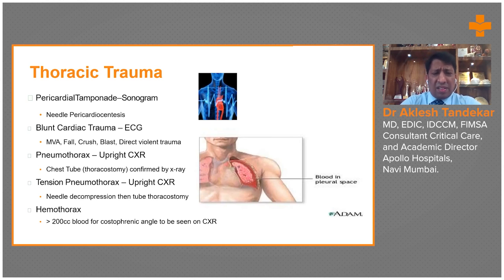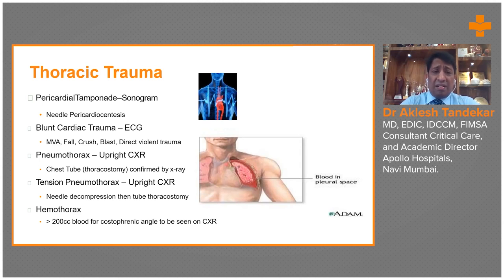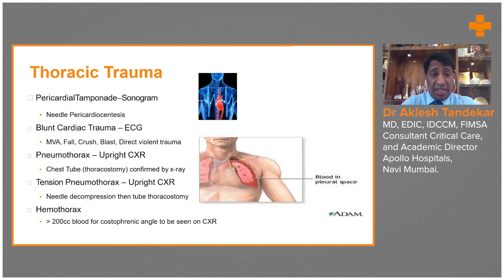As far as thoracic trauma is concerned, pericardial tamponade is one of the most common findings and is assessed with 2D echocardiography. Clinical findings are dilated neck veins, muffled heart sounds, and hypotension — the classic Beck's triad. Treatment is needle pericardiocentesis: a needle is passed through the epigastric region and blood is aspirated. A catheter can be left in place because bleeding may be ongoing, and later surgical open thoracotomy is needed to treat the underlying pericardial injury.